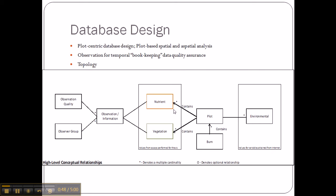This makes sense in that we're trying to connect the different variables to the plots so that we can compare the plots to one another. Another important aspect of this database design is what I call the observation/information attribute table, connected to other observation qualities as well as to the variables. The purpose of this branch is to account for the fact that during sampling for both the soil and the vegetation, multiple sampling points through time were taken.